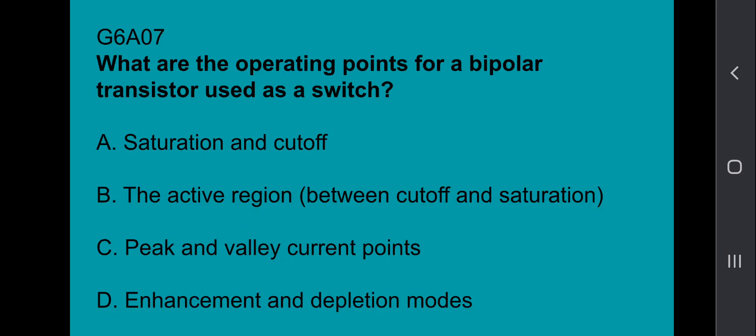G6A07: What are the operating points for a bipolar transistor used as a switch? That's going to be saturation and cutoff.